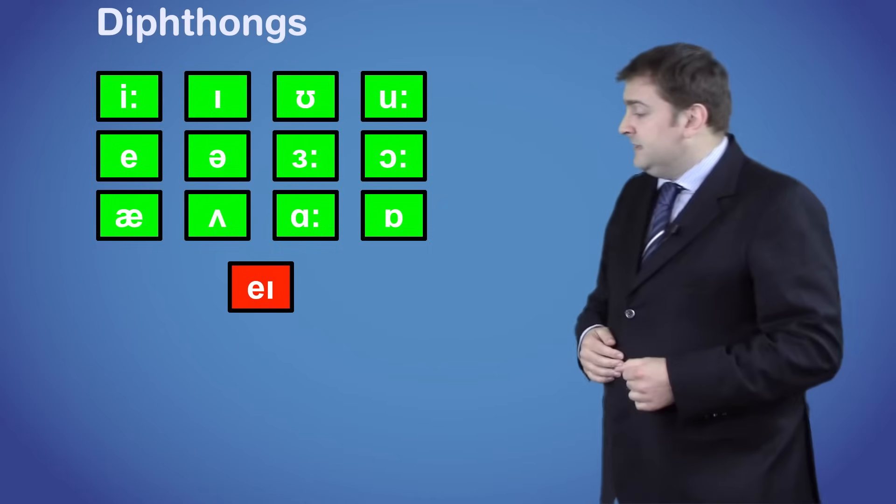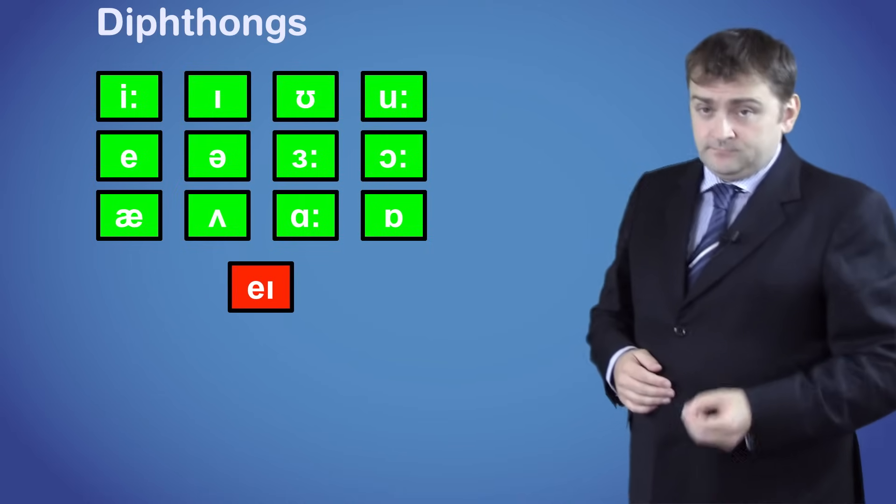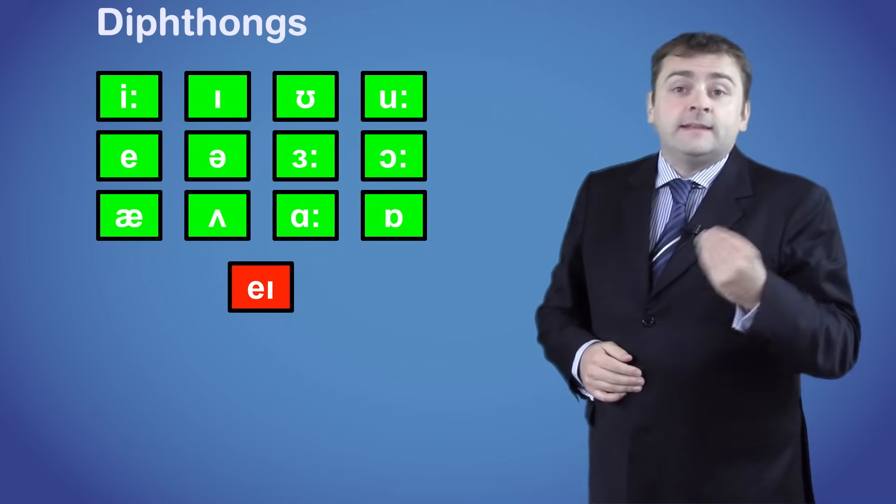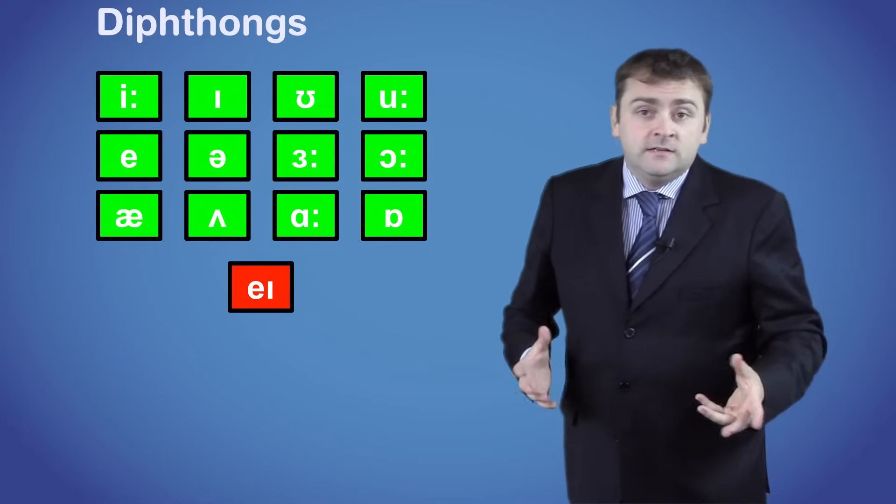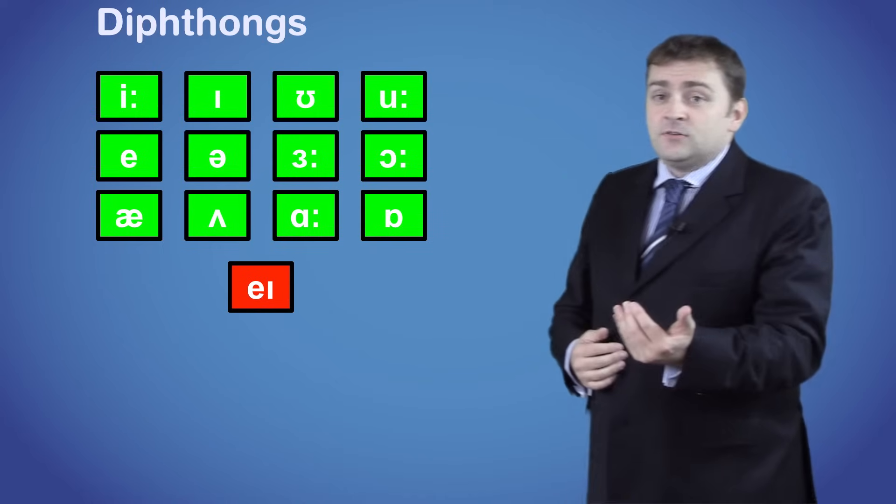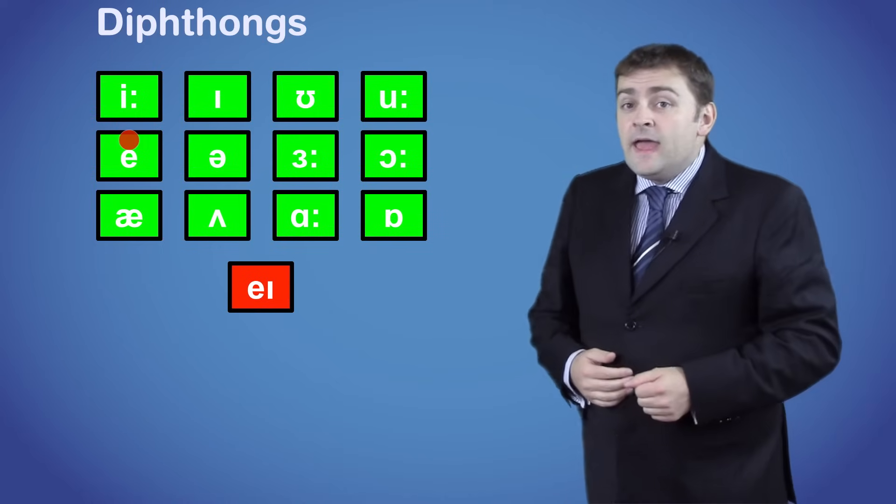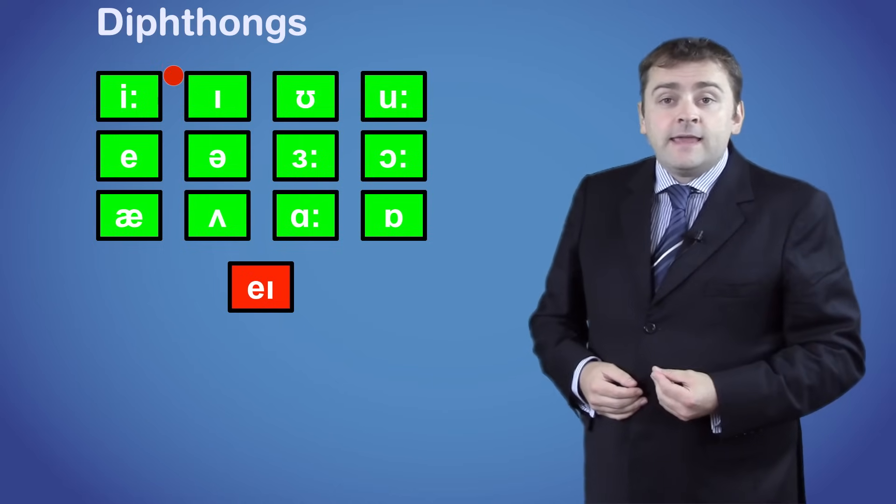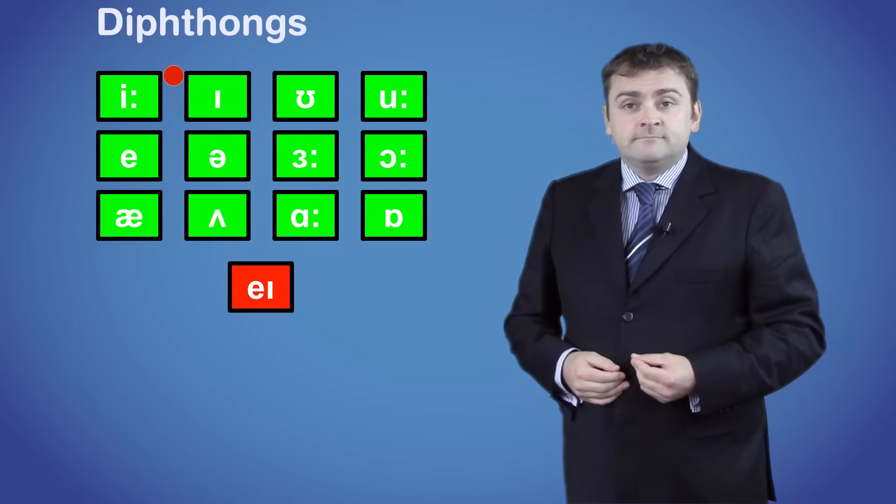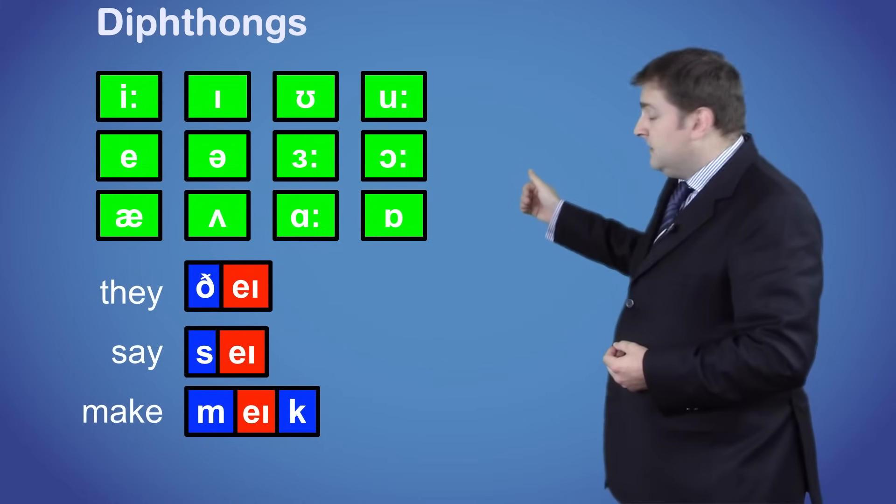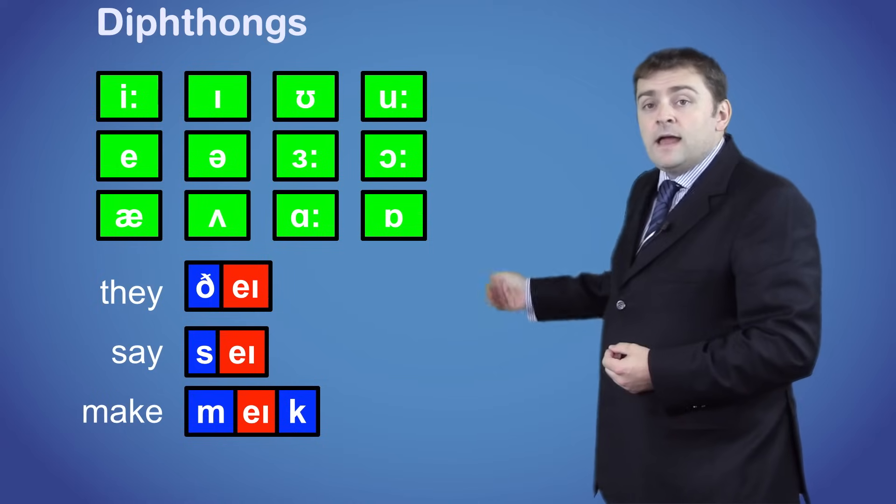The first sound is EY, which is a combination of E and I or E. This time we need to close our mouths a little as we say the sound, starting on the E and finishing on the I or E. AY. As in the words they, say and make.